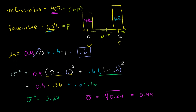In the last video, we figured out the mean, variance, and standard deviation for a Bernoulli distribution with specific numbers. What I want to do in this video is to generalize it — to figure out the formulas for the mean and variance of a Bernoulli distribution if we don't have the actual numbers, if we just know that the probability of success is p and the probability of failure is 1 minus p.